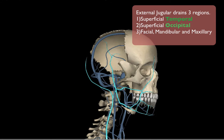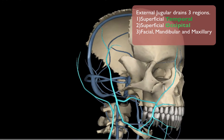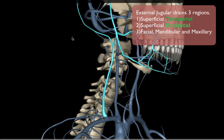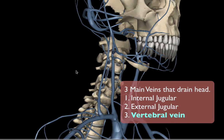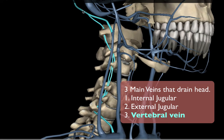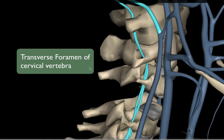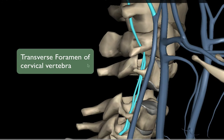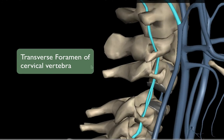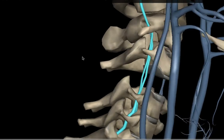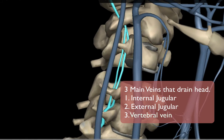There are three main veins that come from the head. The third is the vertebral vein, which branches off from the occipital vein. If you take a closer look, you can see how it passes through the transverse foramina of the vertebrae.